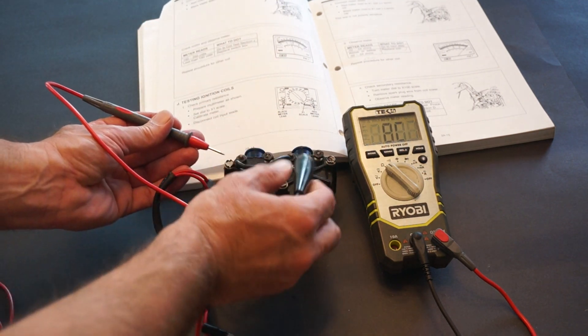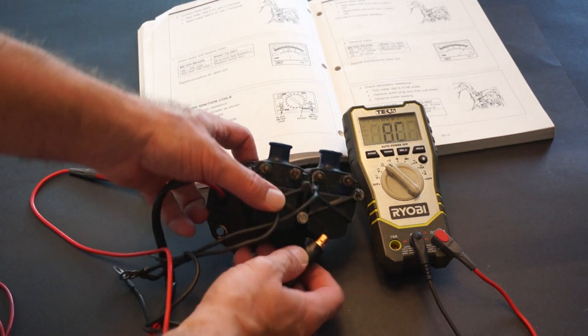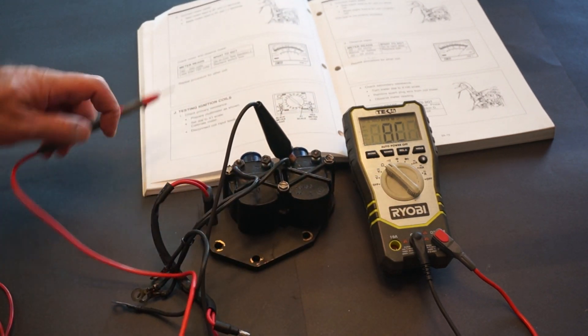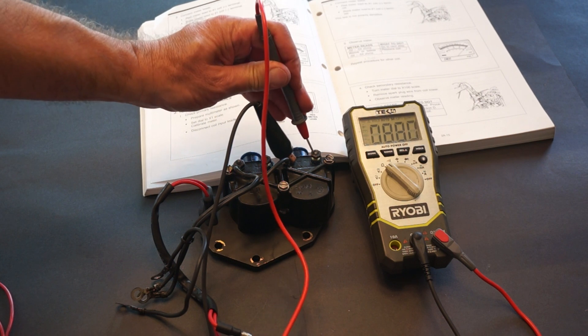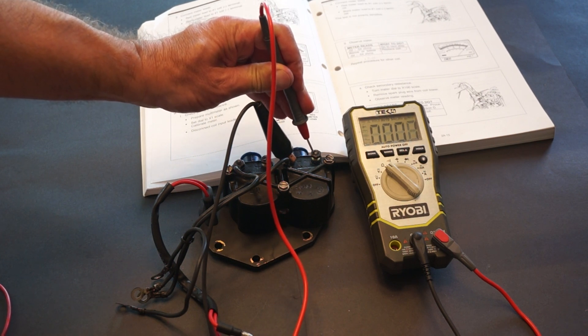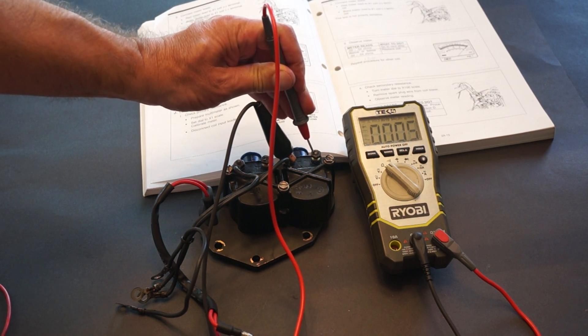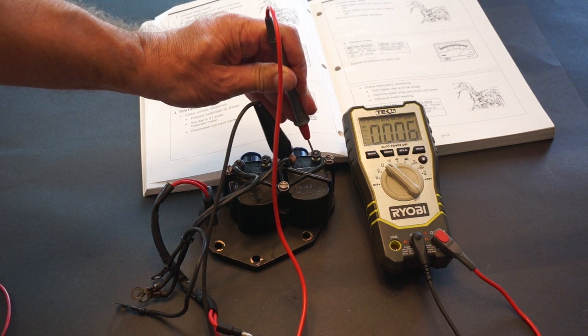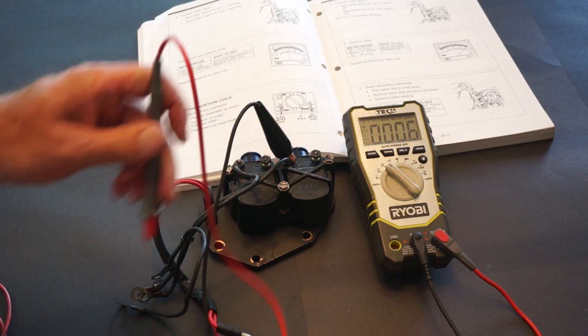Let's do the same thing on the second coil. So again, negative to positive. Yeah, this is a good resistance. It's right there around 0.5 again. So with this, the primary resistances on both coils is good.